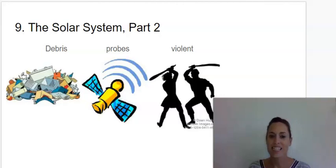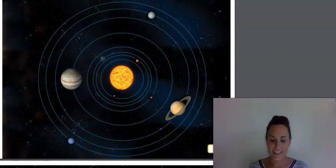We are on Knowledge Six, Lesson Nine: The Solar System Part Two. Our first vocabulary word is debris. Debris is scattered pieces of remains. The next word is probes. These are tools for exploring things that cannot be easily seen. The next word is violent. Violent means dangerously rough.